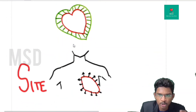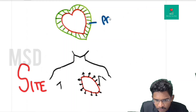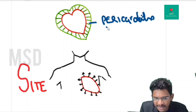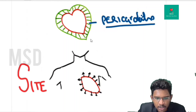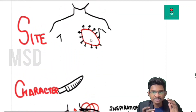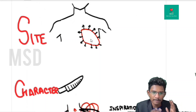Another cardiovascular cause of chest pain is pericarditis — fluid accumulating around the heart, irritating the pericardium, leading to pericardial chest pain. The site of chest pain is the center as well as the left side of the chest, corresponding to the pericardium's location.